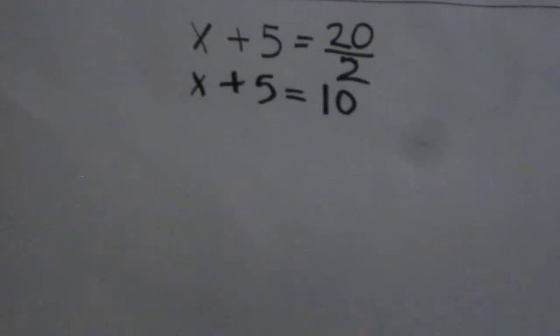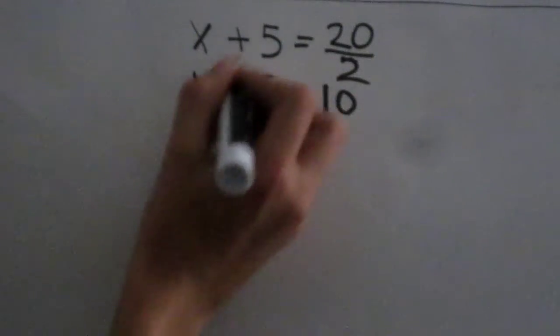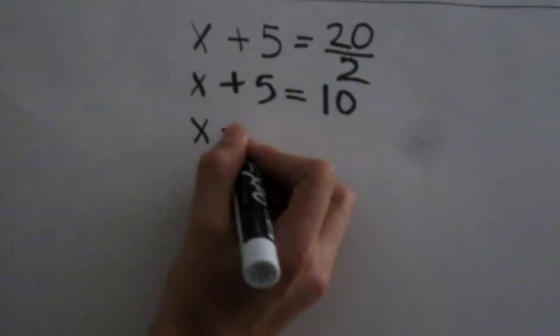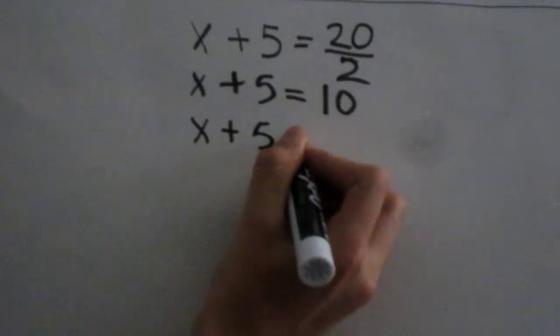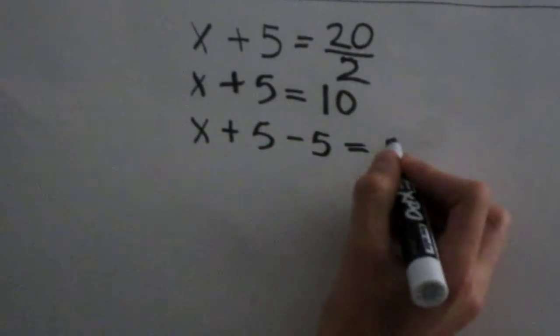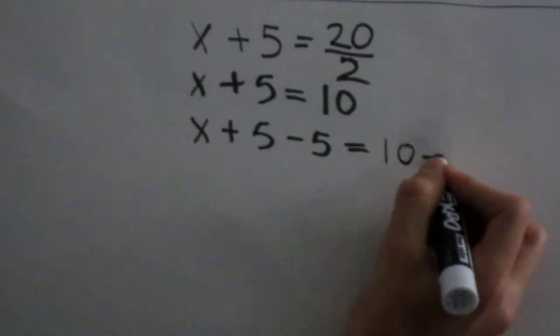Now, since we have to remove these two numbers here, try to make them as low as possible. So x, let's remove 5 from this side. So we minus 5 by itself, and minus 5 from the other side of the equation.